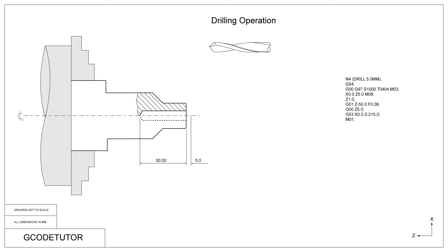As with all operations within the program, I like to end each operation with an M01 command. This way we can choose to stop the machine using an optional stop if need be. It makes it easy to jump in and out of different parts of the program, and also allows us to check the quality of the tools and the components after cutting if we feel the need.